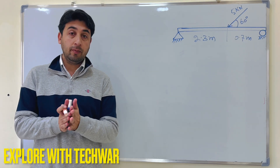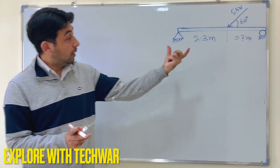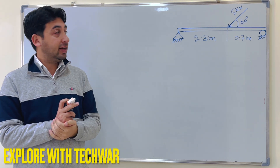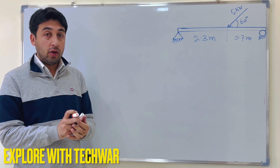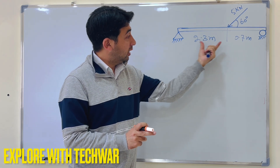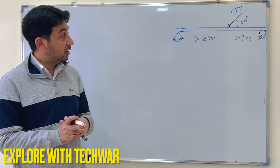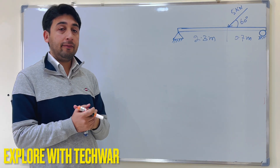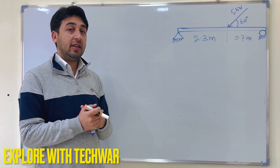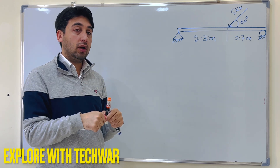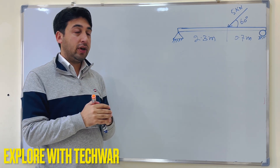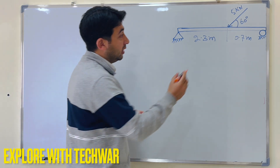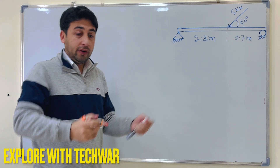In this video we will find all the support reactions of a simply supported beam which has an axial load. The total length of the beam is 3 meters, and from the left side at 0.7 meters, one force of 5 kilonewtons is acting not straight downward or horizontal, but at an angle of 60 degrees with the horizontal.